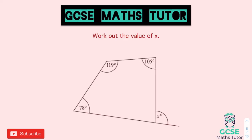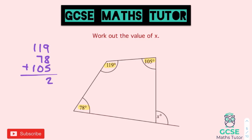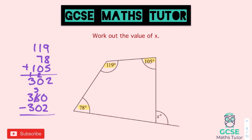Here's your question: work out the value of X, which is one of the exterior angles on the quadrilateral. First I'm going to add the three angles together to figure out what's missing inside. We have 119, 78, and 105. Adding those: 9 and 8 make 17, plus 5 is 22. Then 7 plus 1 is 8, plus 2 is 10. And then we've got 3, so 302. To figure out what's missing, we take that away from 360. So 360 take away 302: we get 8, 5, and 0 — so that comes out as 58 degrees. The missing angle in our quadrilateral is 58 degrees.